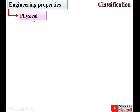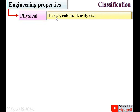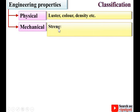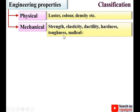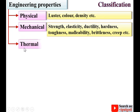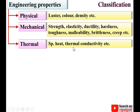First, physical properties like luster, color, density, etc. Second, mechanical properties like strength, elasticity, ductility, hardness, toughness, malleability, brittleness, creep, etc. Third, thermal properties — specific heat, thermal conductivity, etc.